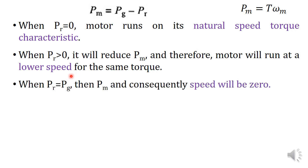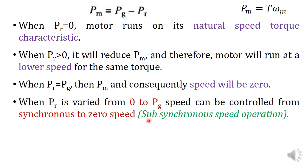Another case: when Pr = Pg, both powers are equal, meaning there is no mechanical power developed — Pm = 0 — and therefore speed will be 0. So by controlling Pr from 0 to Pg, we can control the speed of the motor from natural speed ωms down to 0. This is known as sub-synchronous speed operation — operation of the motor below synchronous speed, from zero speed to synchronous speed.